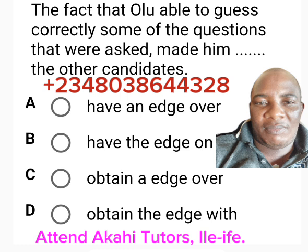A: Have an edge over. B: Have the edge on. C: Obtain an edge over. D: Obtain the edge with. The correct answer to this question is: have an edge over.